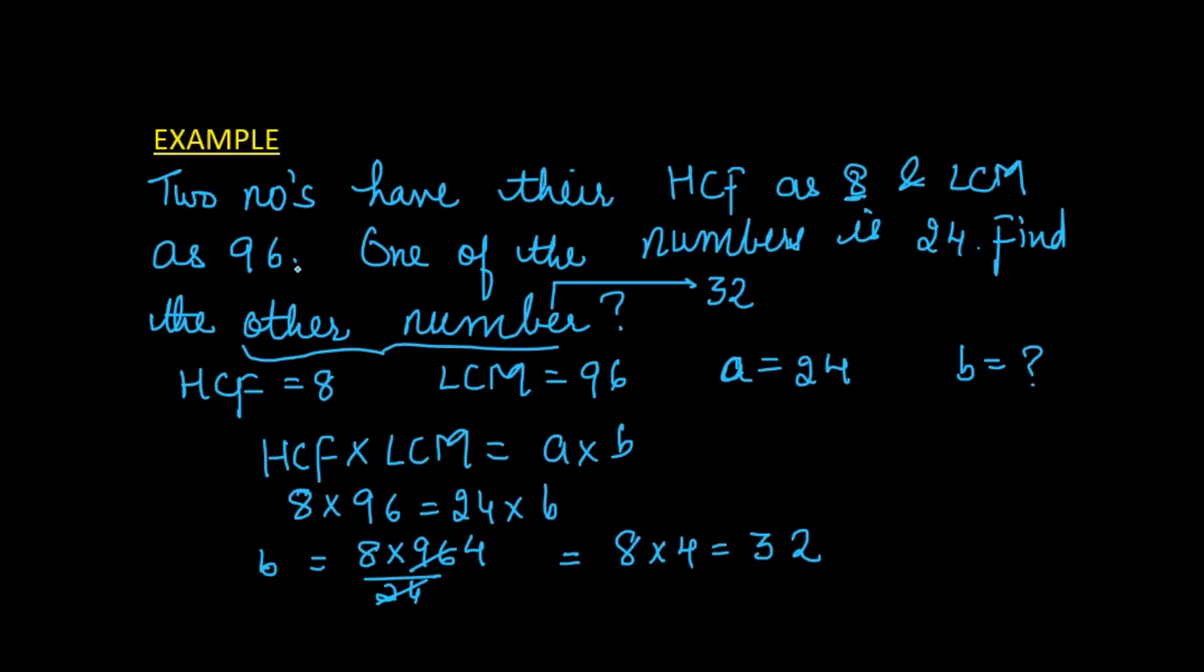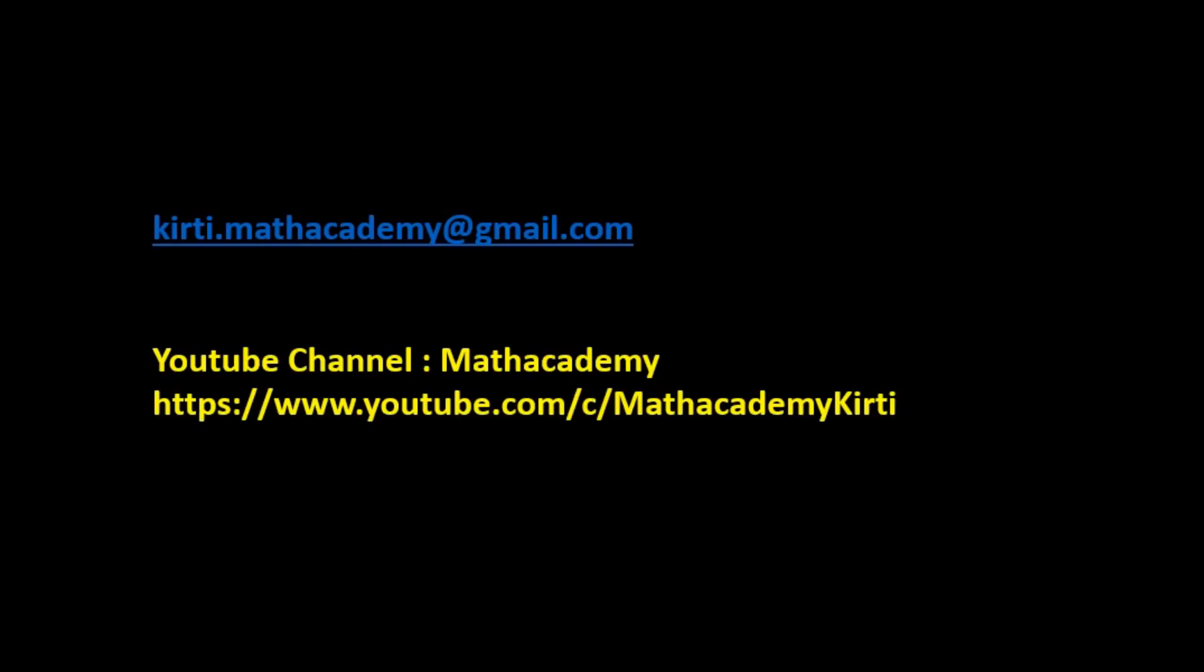We can verify: the HCF of 32 and 24 is 8, and their LCM is 96. This is all about the relationship between the highest common factor and the lowest common multiple of two given numbers. If you have any doubts, you can send me an email at keerti.mathacademy@gmail.com. This is my YouTube channel Math Academy. Please subscribe to my channel. Thank you.